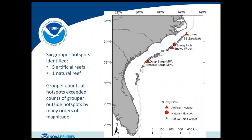Six grouper hotspots were identified — five artificial reefs and one natural reef. Gray circles represent non-hotspot natural reefs, the red circle a natural reef hotspot, and red triangles the artificial reef hotspots. Three artificial reef hotspots came from our ROV survey: the Snowy Rack, Deep Barge, and Shallow Barge — the two barges sunk inside the Charleston Deep Artificial MPA, named for their depths of 85 and 100 meters respectively. At all hotspot areas, grouper counts exceeded those outside hotspots by many orders of magnitude.